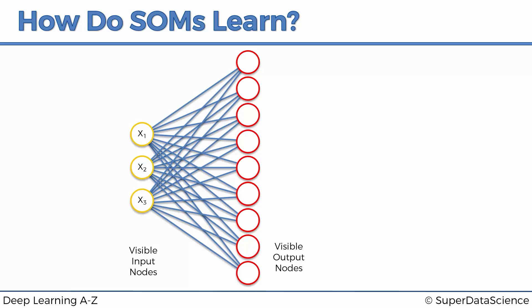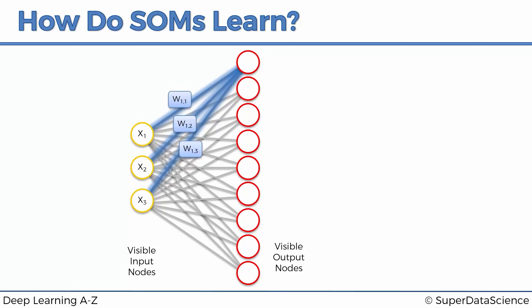I'll try to point those differences out, so as long as you're aware of this we should be fine. The first thing we're going to look at is the top node in our outputs, and specifically the three connections or synapses leading to this node. We'll gray out the rest of the synapses so we know we're focusing on these specific three. Each one of them will have a weight assigned to it: w11, w12, and w13, where the first index is the node number and the second index indicates which input that synapse connects from.